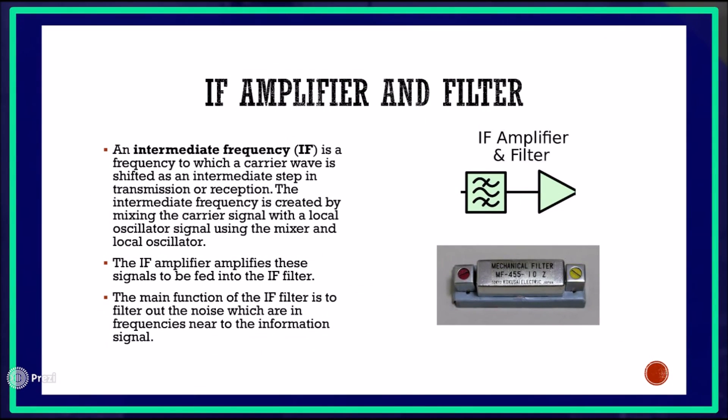Next is the IF amplifier and filter. An intermediate frequency is a frequency to which a carrier wave is shifted as an intermediate step in transmission or reception. The intermediate frequency is created by mixing the carrier signal with the local oscillator signal. The IF amplifier amplifies these signals to be fed into the IF filter, whose main function is to filter out noise in frequencies near to the information signal.